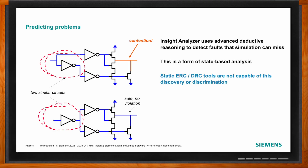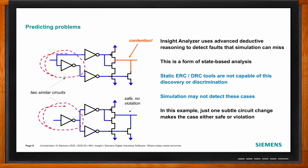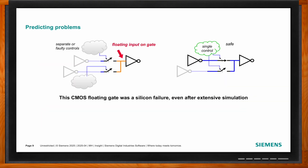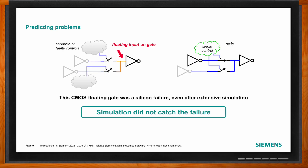Insight Analyzer uses advanced deductive reasoning capabilities not available in static ERC or DRC tools. A small, subtle circuit change — like how a designer hooks up multiple control signals — can change a circuit from safe to a contention situation. From a simulation perspective, it's often very difficult to have the right input vectors to clearly identify these challenges. For example, floating input gates with multiple controls require correct synchronization of signals to be safely turned on and off.